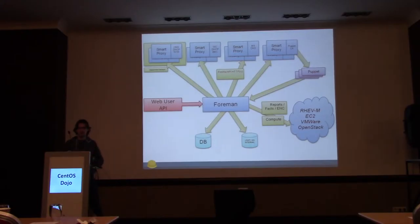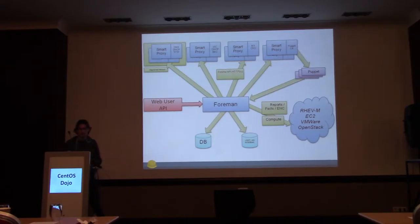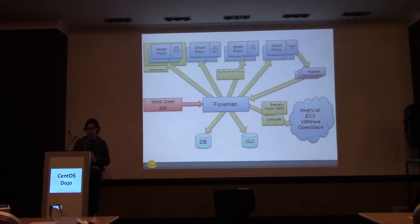You have the Foreman itself as the core — it talks to the database. We support SQLite (not for production), MySQL, and PostgreSQL. PostgreSQL is the default. Different smart proxies can be on segregated networks. Foreman only needs to talk to a smart proxy, and if you're covering an entire data center with different networks, each proxy can have different features — DNS, DHCP, TFTP, Puppet.